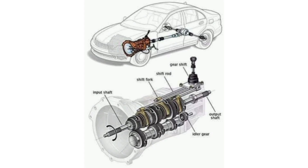The disadvantages of the transmission system include: complexity, as manual transmissions require driver skill while automatics have intricate components making repairs costly; a learning curve, as manual transmission necessitates practice and may be less accessible to some drivers; maintenance, as transmission may require periodic servicing and fluid changes; wear and tear, as over time transmission components can wear out leading to potential failures; and maintenance cost, as transmission repair or replacement can be expensive.